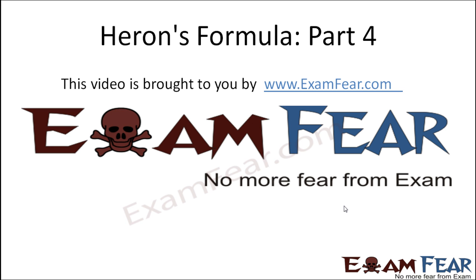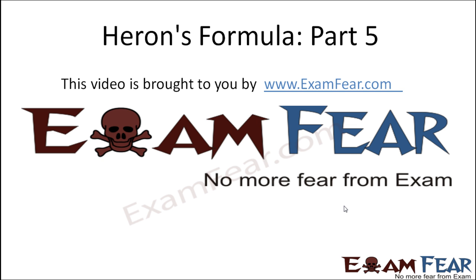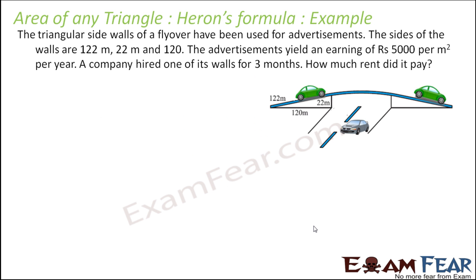Hello friends, this video on Heron's Formula Part 4 is brought to you by examvii.com. There is a flyover with a triangular side wall. The sides of this wall are 122 meters, 22 meters, and 120 meters. This wall is used for advertisements.